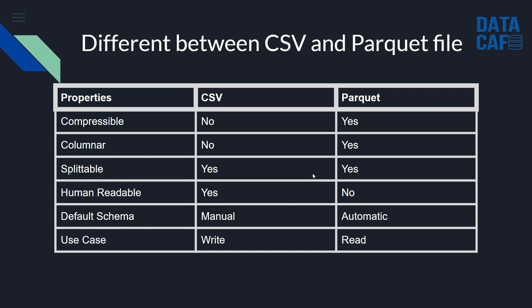Now the differences between CSV and Parquet. First, compression: CSV has no compression mechanism, but Parquet has advanced compression. Second, columnar storage is not available in CSV but is present in Parquet. Third, splittability is a feature available in both CSV and Parquet formats. Fourth, human readability: CSV contents are easily readable, but Parquet data is stored in binary format and cannot be read directly.